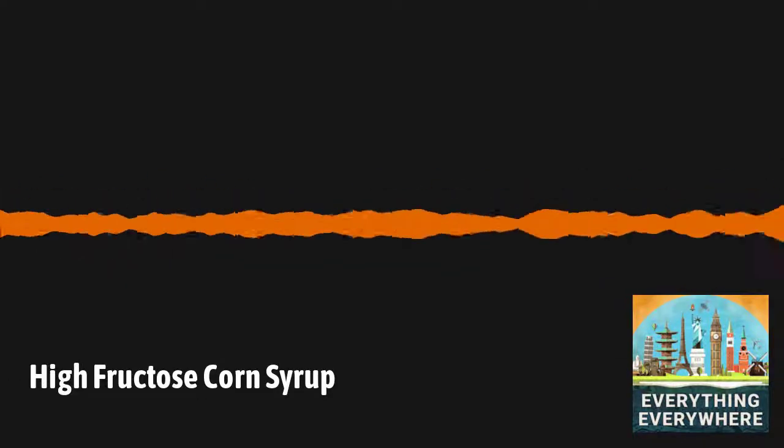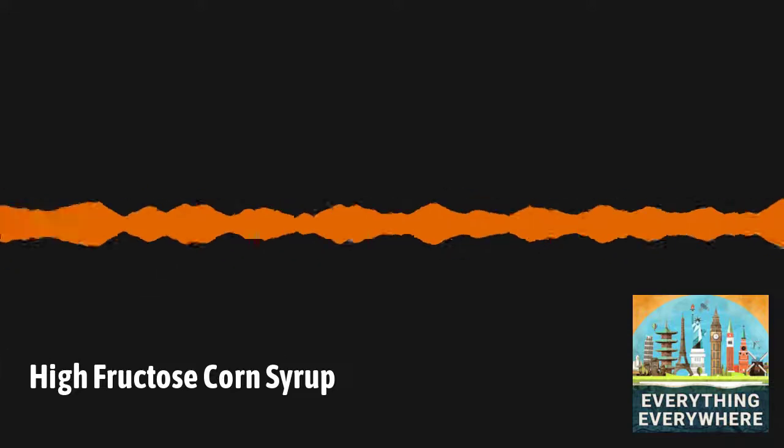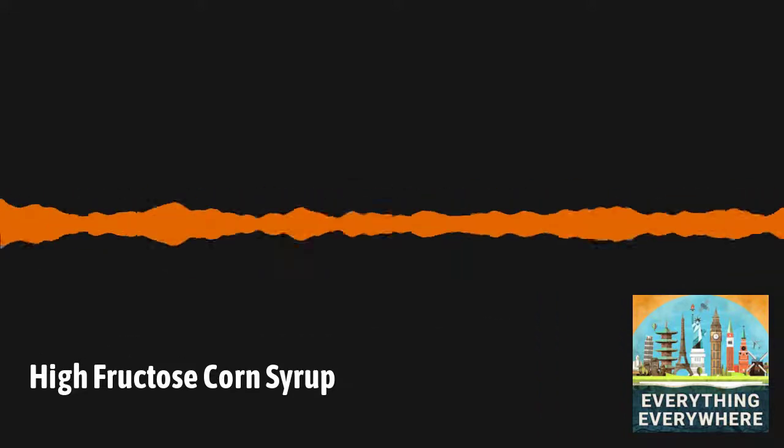In 1957, two chemists from the Clinton Corn Processing Company of Clinton, Iowa, developed a system for converting the glucose found in cornstarch into fructose.